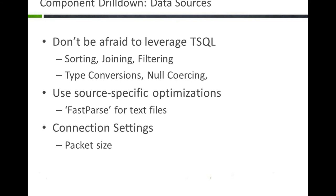The last source-level item is adjusting the packet size when connecting to any OLE DB compliant data source. On fast parse: when reading data out of a text file or doing data conversions, there's a contract between SSIS and the data source — the data is validated to make sure it's actually a date or number. This applies to numbers and dates typically.